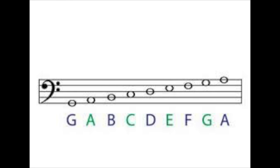When reading music in the bass clef, we give each of the five lines and four spaces a specific note name. Each line and space relates to a specific note using the letters A through G.